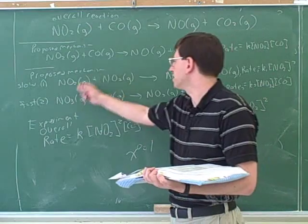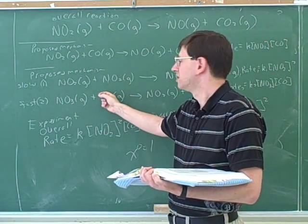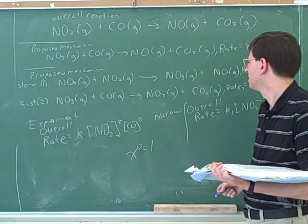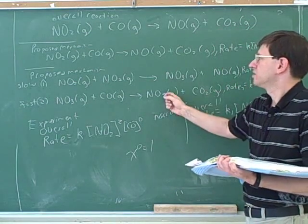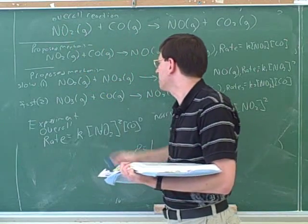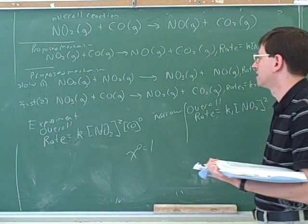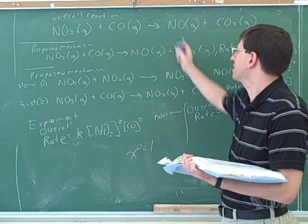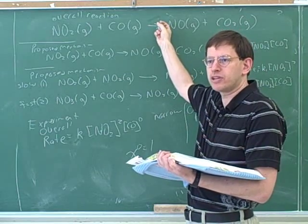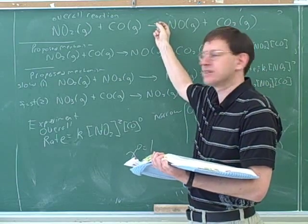So how many NO2s do we have on the left? Two. And how many NO2s on the right? One. That gives us one overall. So that matches up. How many NO3s on the left? One. And how many NO3s on the right? One. So those would cancel. And that's why there's no NO3 in the overall reaction. What's the name for the role that the NO3 is playing? Intermediate. It's the intermediate.